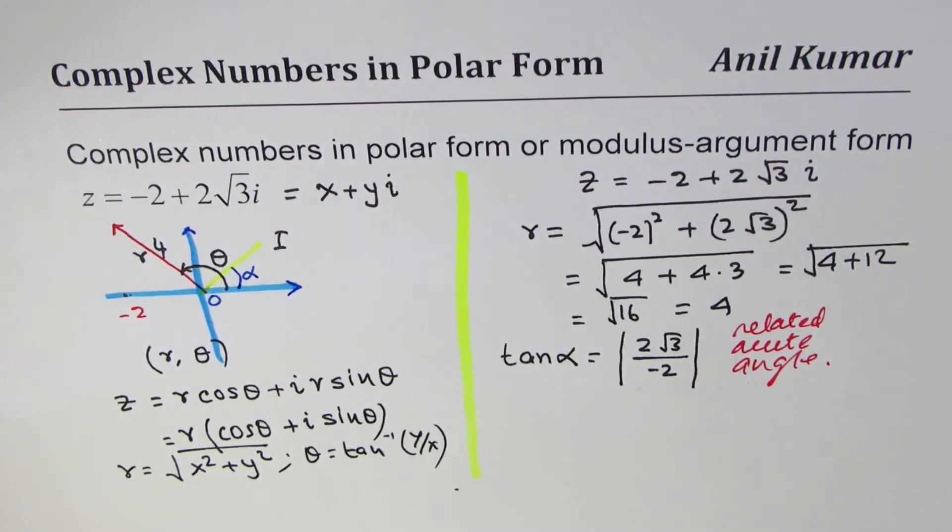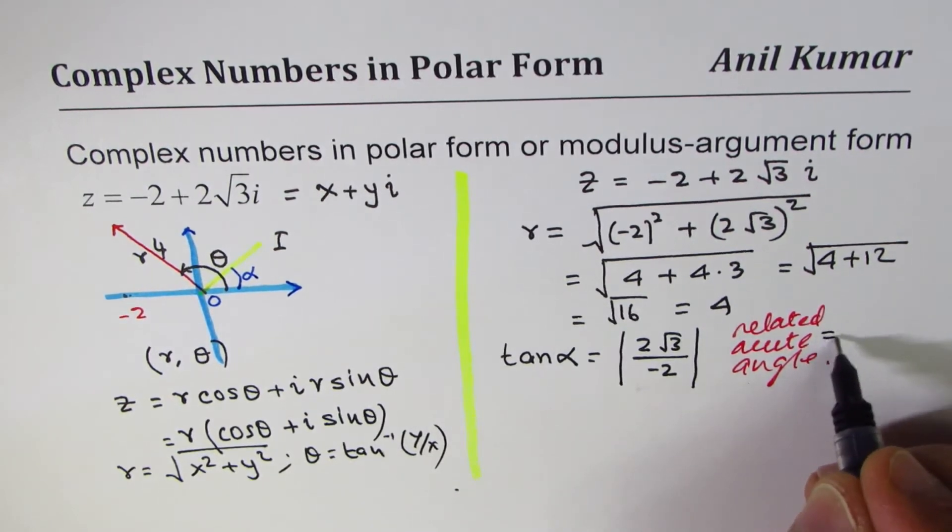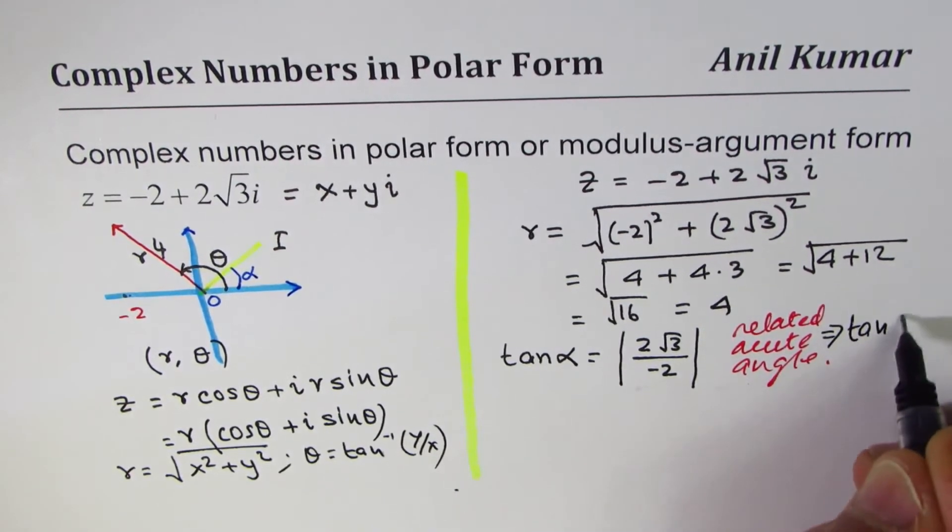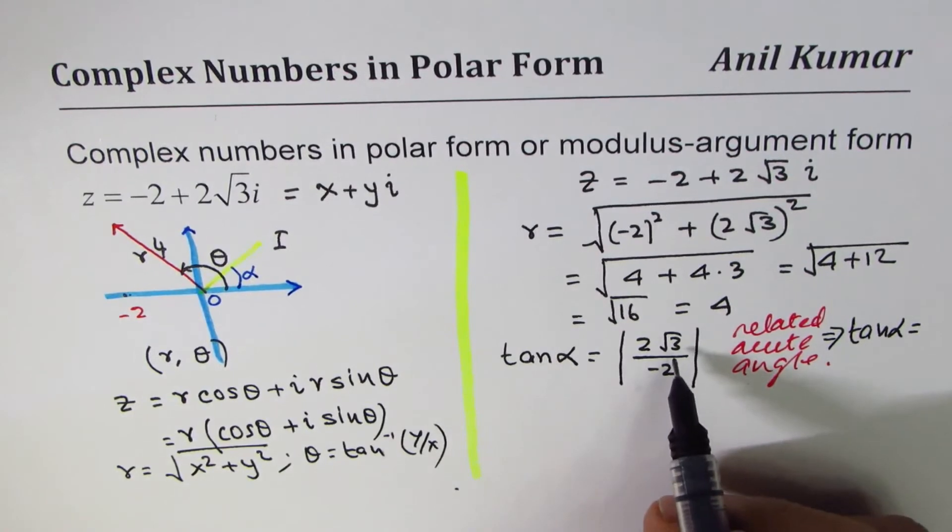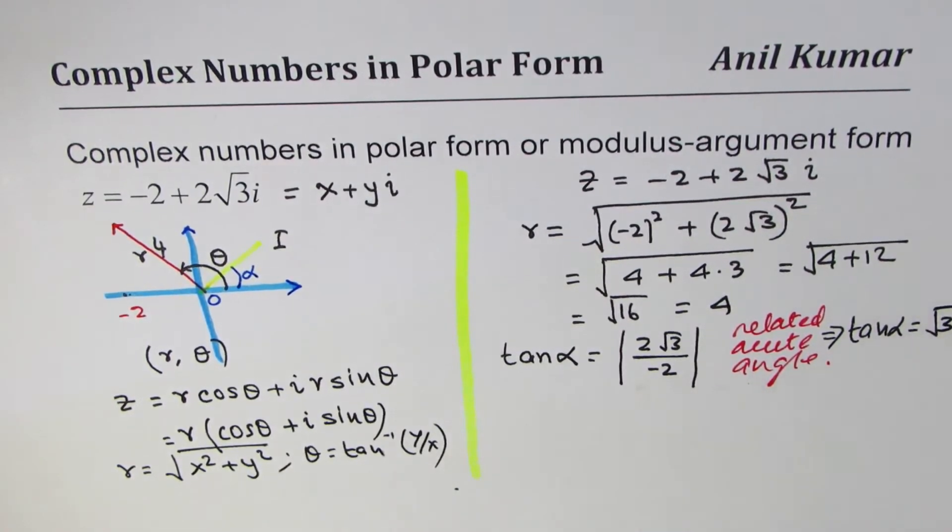So what we get here is, that gives you tan alpha equals 2 square root 3. Tan alpha is square root 3.